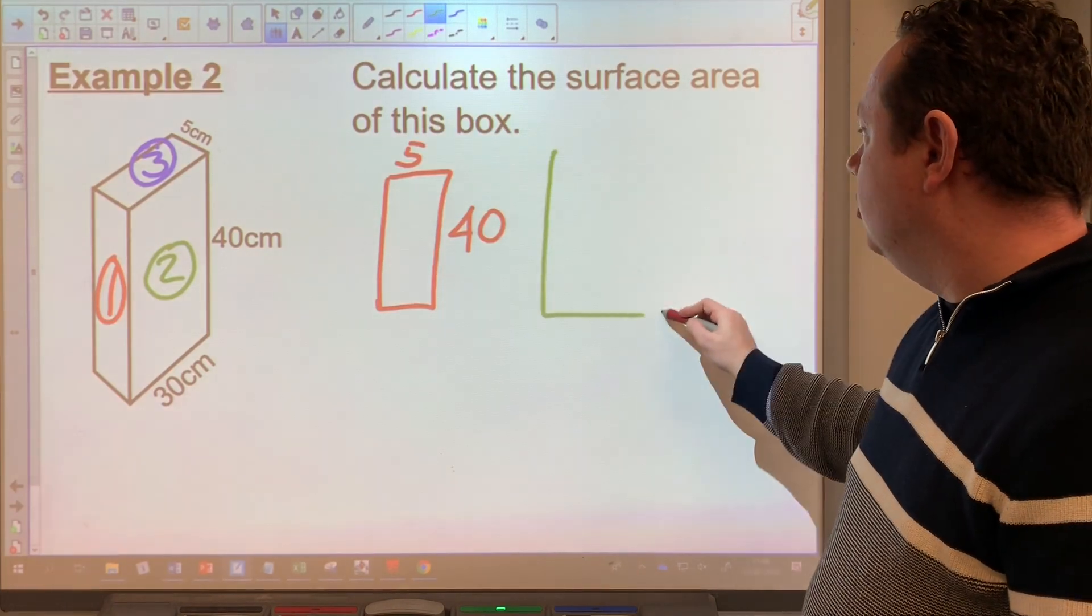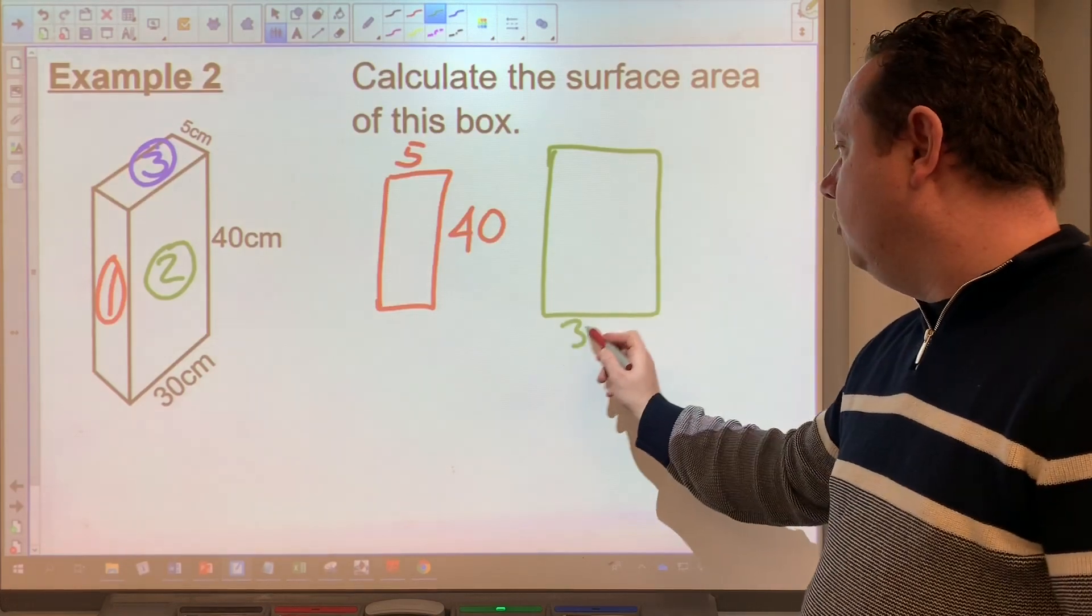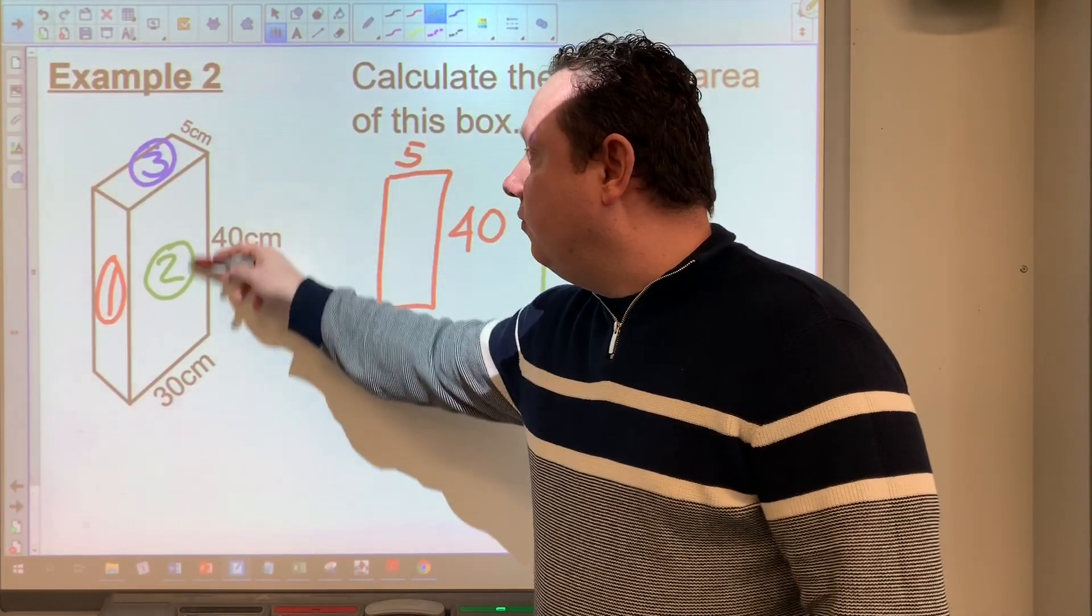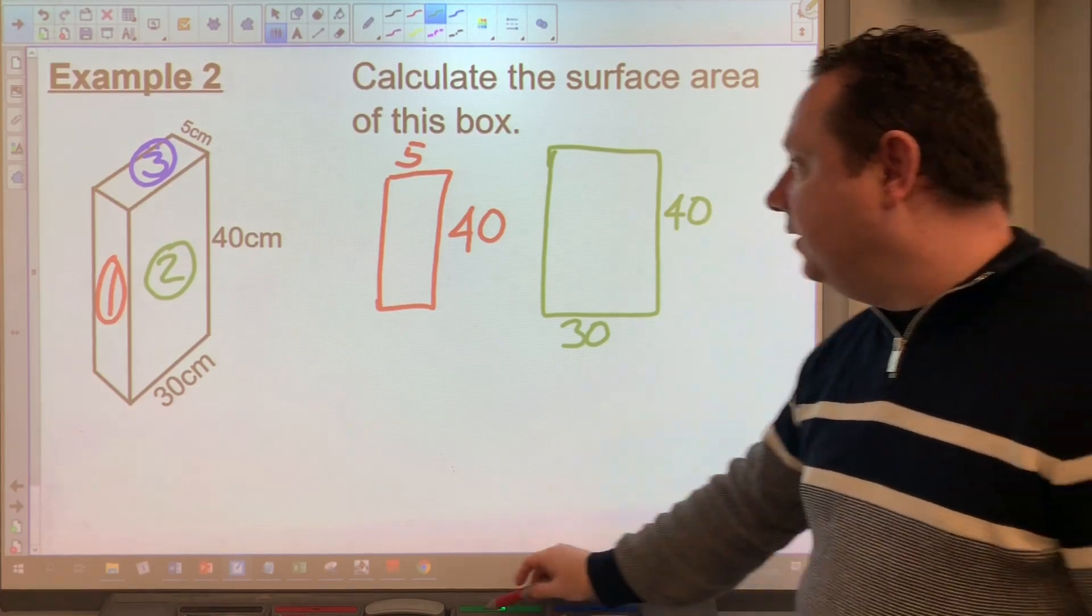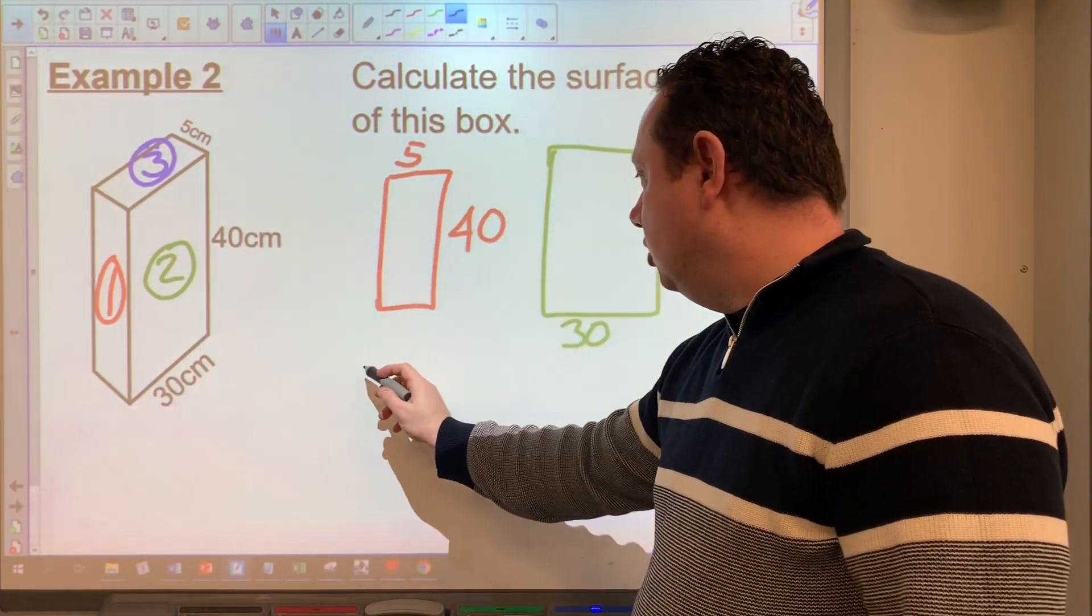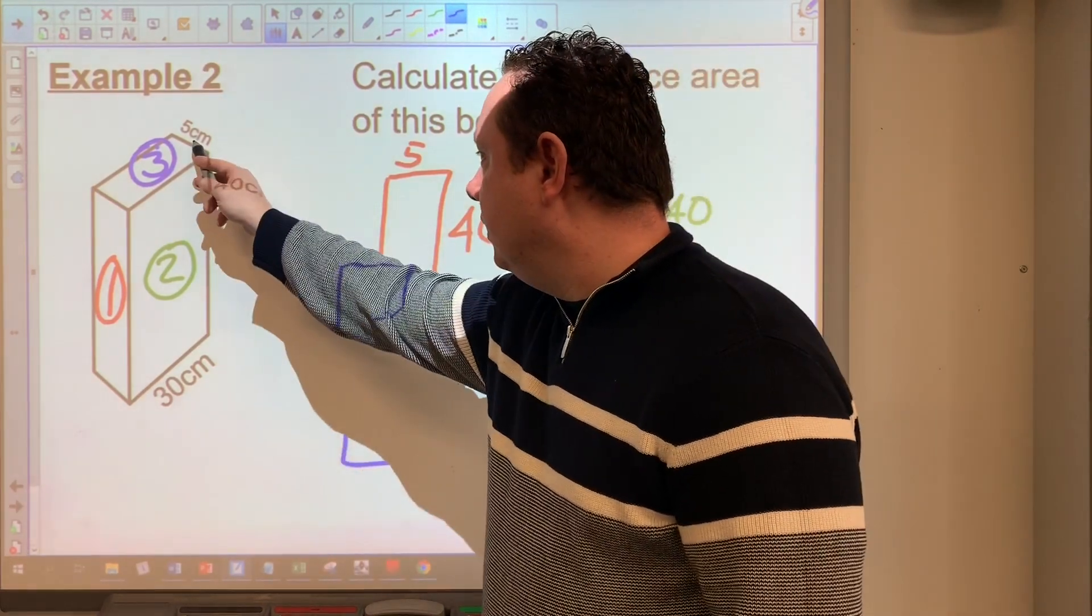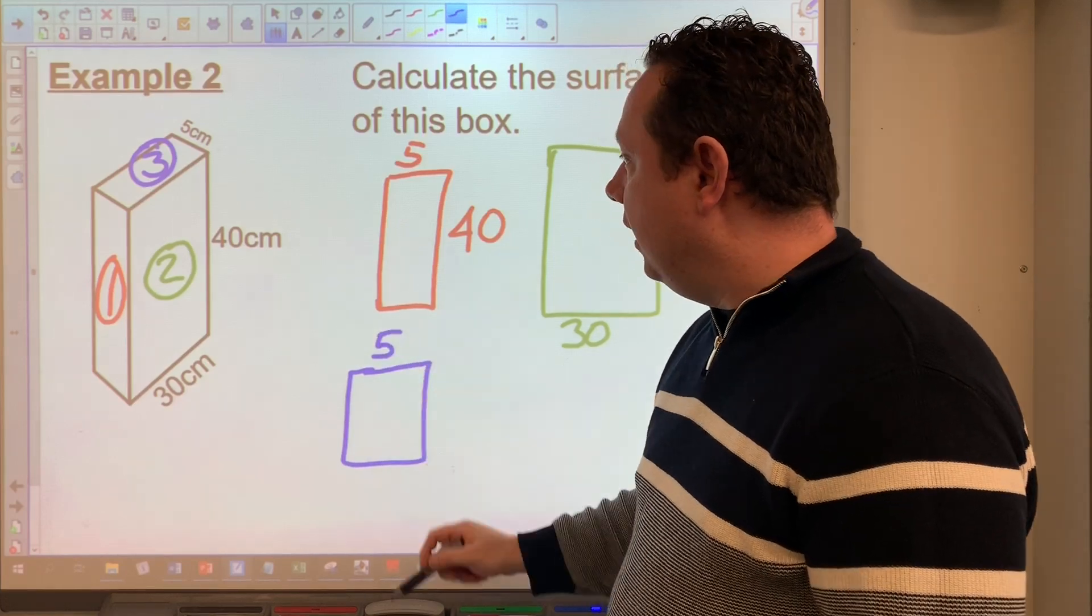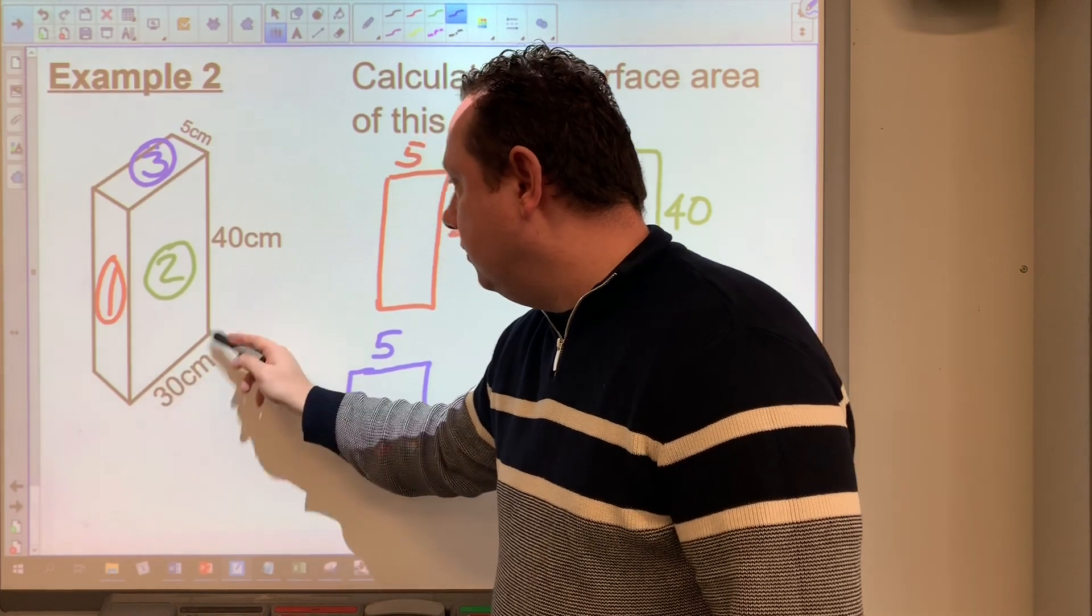And I'll do the same for the green rectangle. So again, I draw a rectangle. We can see it's 30. So I can just write 30 on one of the sides. And we can see it's 40 going up the side. So I can just write 40. And I can do the same for the blue one up the top. So I just draw a rectangle. I can see that on one side, it's five. And on the other side, it is 30 because this one's 30.